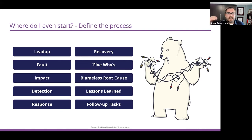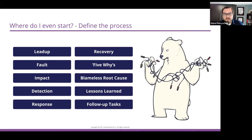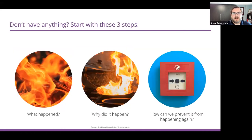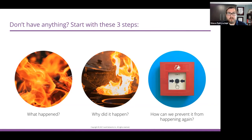There were ten total steps in this outline, and that brings us to the end. Going back to what we started with — it was sort of this three-step process: the really light RCA that is just what happened, why did it happen, and how can we prevent it from happening again? For those few people who answered that they don't do anything, that's where we should start.